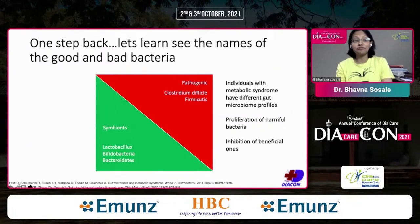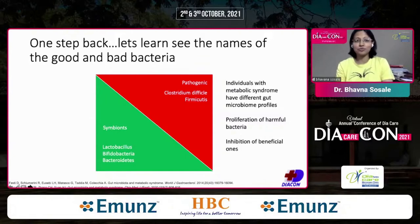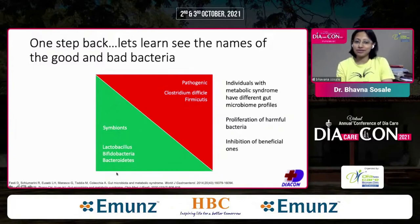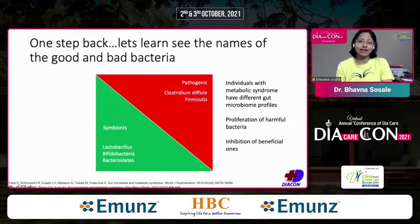Let's learn some of the names of the good and bad bacteria — there are many more, but I've put in a few here. The symbionts are the good bugs: Lactobacillus — that's easy to remember — Bifidobacteria, and Bacteroides species. On the other hand, the red ones are the pathogenic bacteria like the Clostridium group and the Firmicutes group, and this list actually goes on.